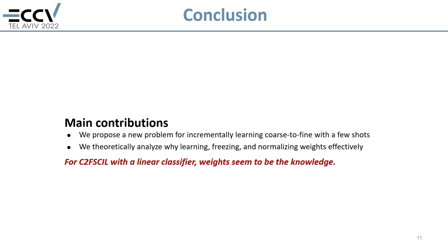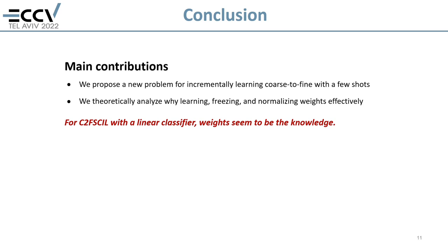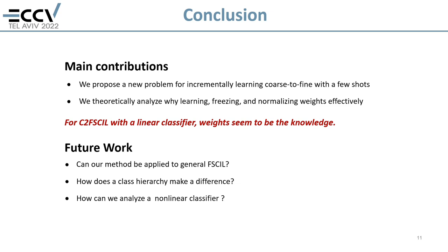To summarize, the contribution of this work is two-fold: we propose a new problem for incrementally learning coarse-to-fine with a few shots, and we theoretically analyze why learning, freezing, and normalizing weights works effectively. For C2FSCL with a linear classifier, weights seem to be the knowledge. However, how generic are our findings in practice? Can they be applied to general FSCL? How does a class hierarchy make a difference? Future work will include examining those questions, non-linear classifiers, and more.